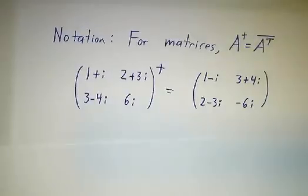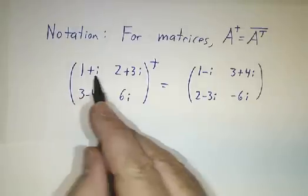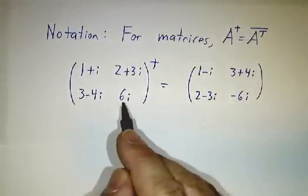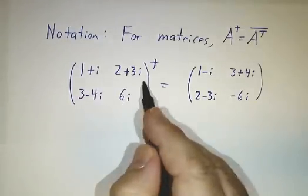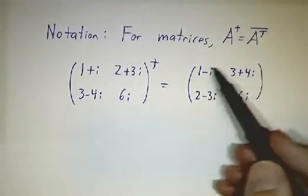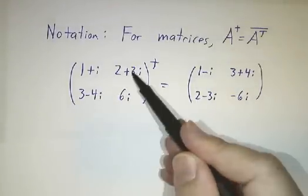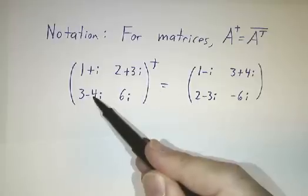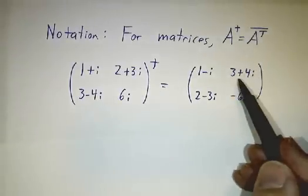So for example, if you had an operator given by the matrix (1+i, 2+3i; 3-4i, 6i), and you want to take its adjoint, you just take its transpose—the 3-4i goes up here and the 2+3i goes down here—but then you have to conjugate things.